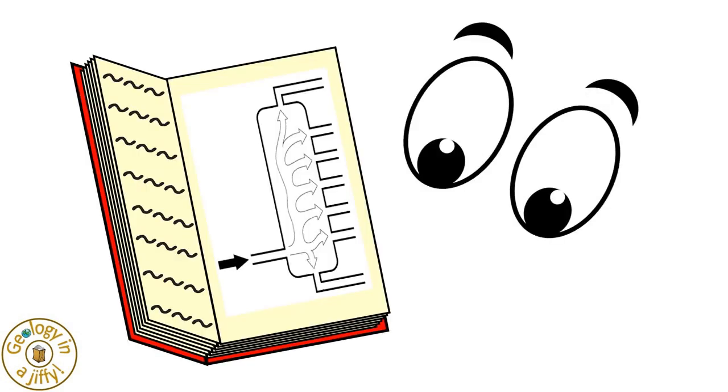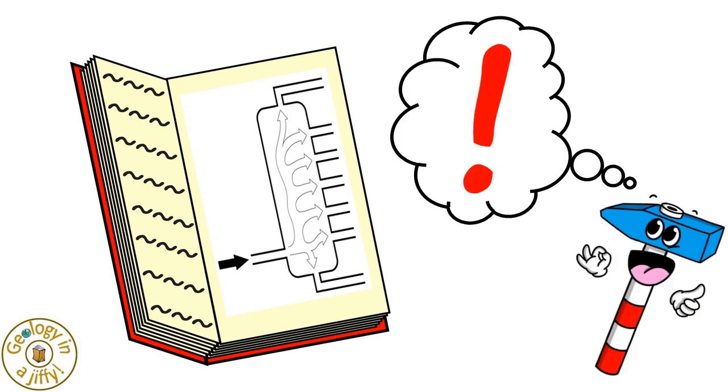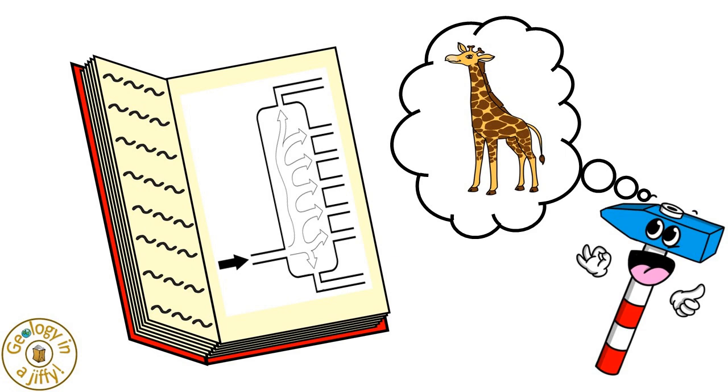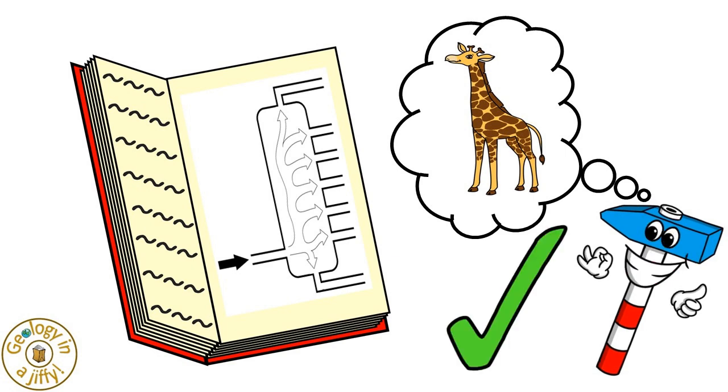But if we look at this diagram of a fractionating tower in a book we could think, oh no, I can't think how to label it. But if we think of Jiffy our Giraffe, it makes understanding the diagram so much easier.